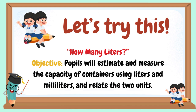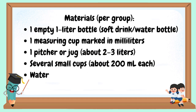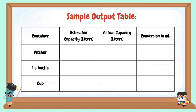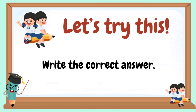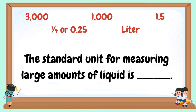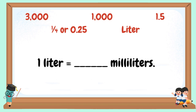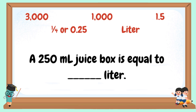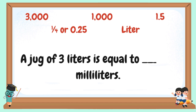Let's try this — how many liters? Write the correct answer. The standard unit for measuring large amounts of liquid is blank. One liter is equal to blank milliliters. A big soda bottle is usually blank liter. A 250-milliliter juice box is equal to blank liter. A jug of 3 liters is equal to blank milliliters.